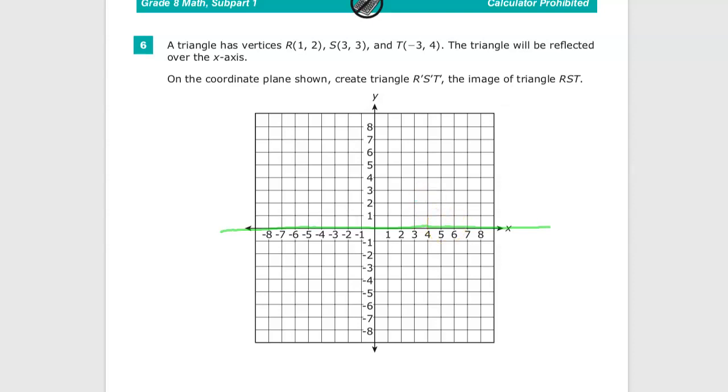So on the coordinate plane, it's going to reflect over the x-axis. On the coordinate plane shown, create R prime, S prime, T prime, the image of triangle RST. Image is a term that means the figure after you've performed the transformation, and the transformation in this case is a reflection.